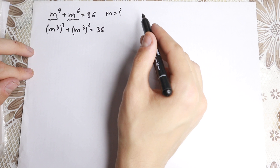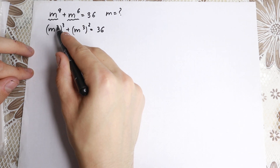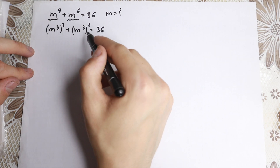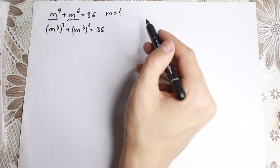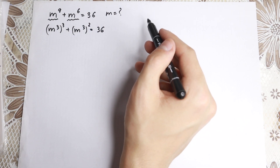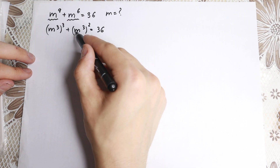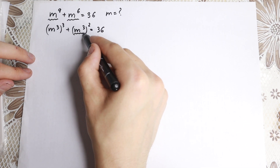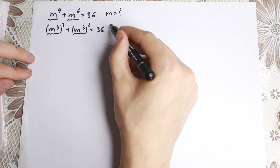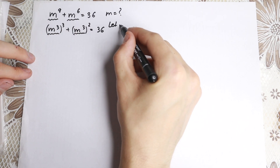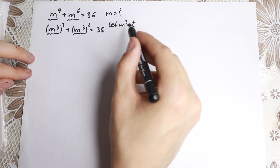A little note about the power property: three times three gives us the same exponent, and three times two gives us the same as in the beginning. So nothing hard here. Now m-cubed and m-cubed are the same element, so we can write a substitution.